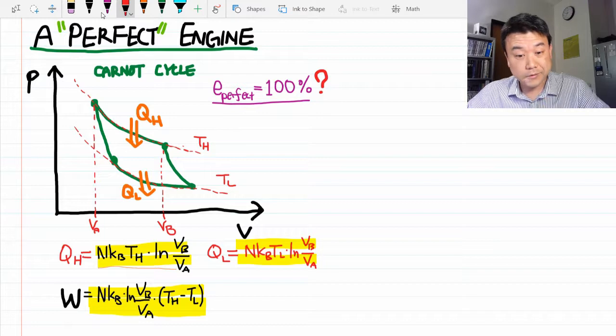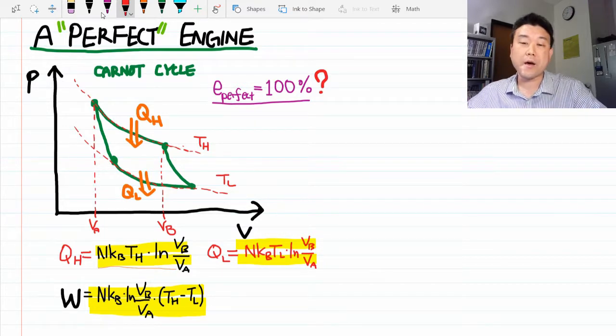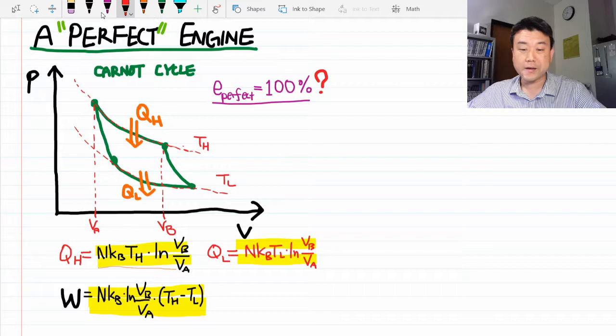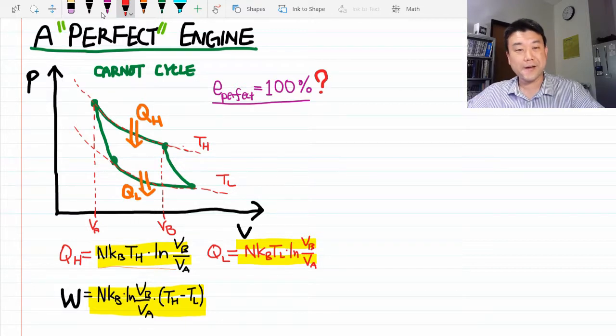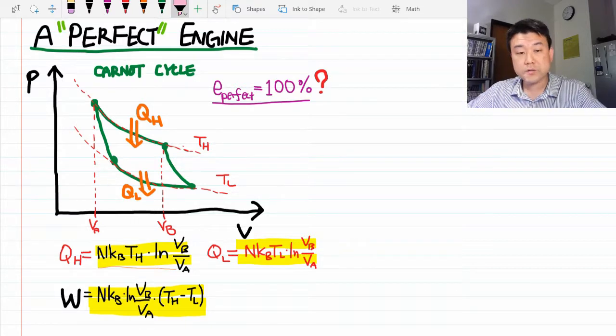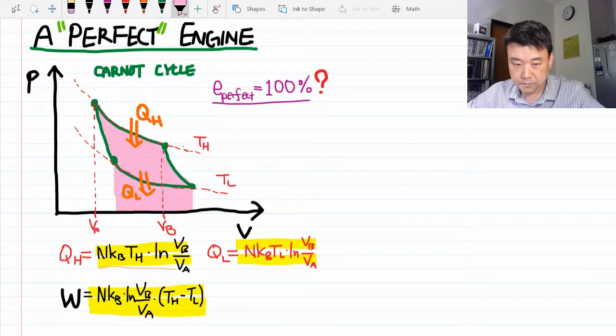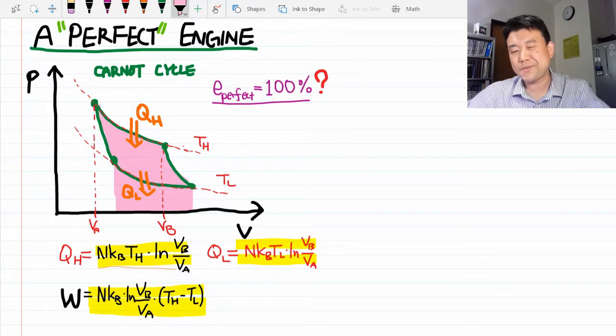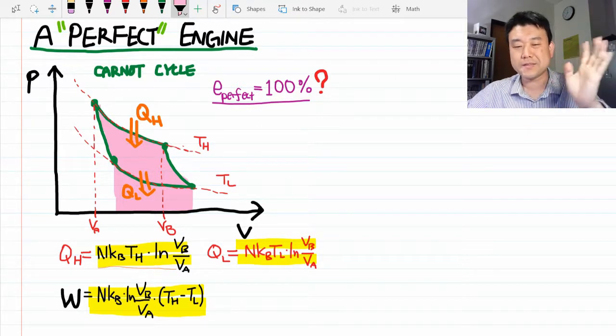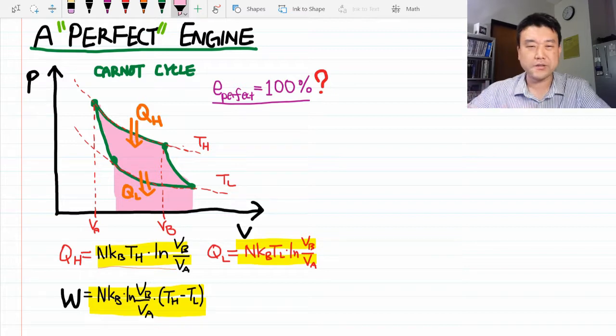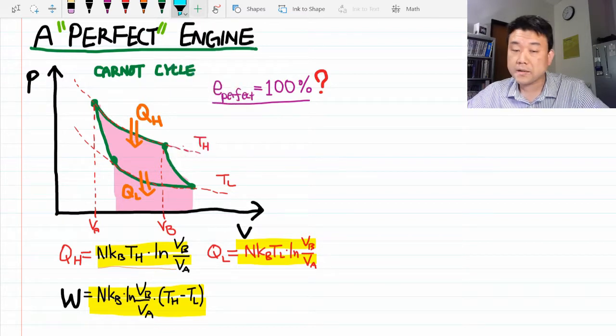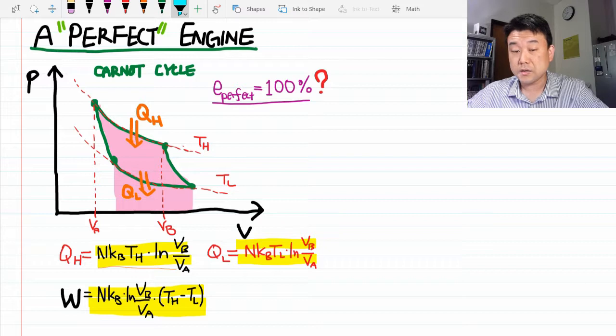So let's consider this question. Could we get 100% efficiency by modifying this cycle somehow? When you look at the Carnot cycle carefully, you can see where all this inefficiency is coming from. Look at how much work is done under the isothermal expansion. I'm drawing this slightly off because I'm imagining the whole adiabatic thing is canceling out.